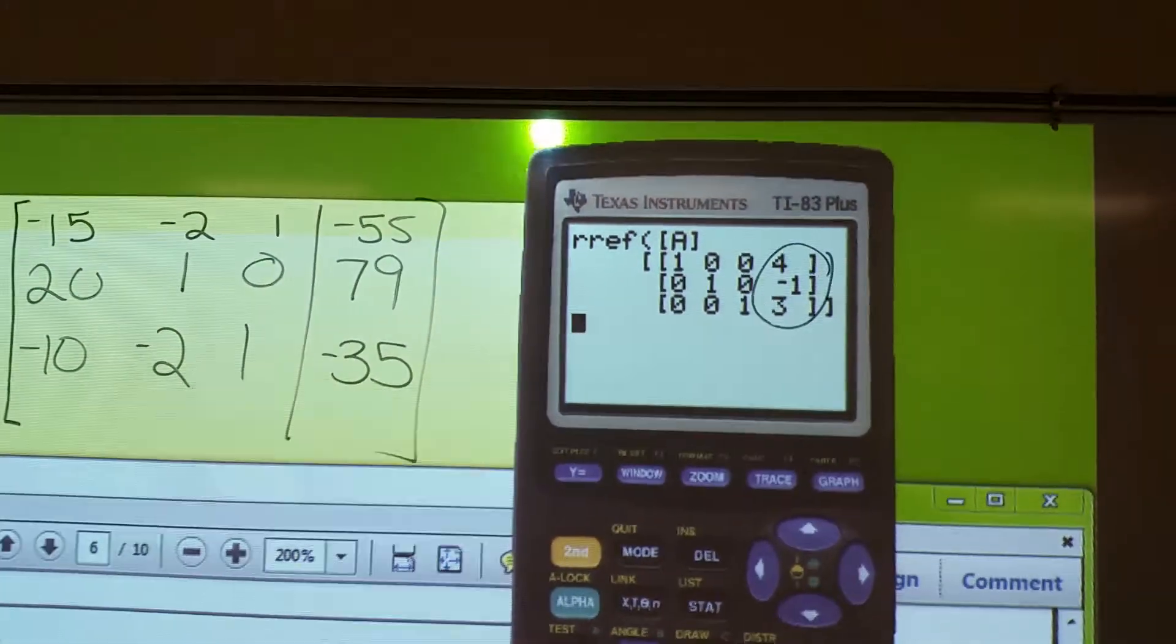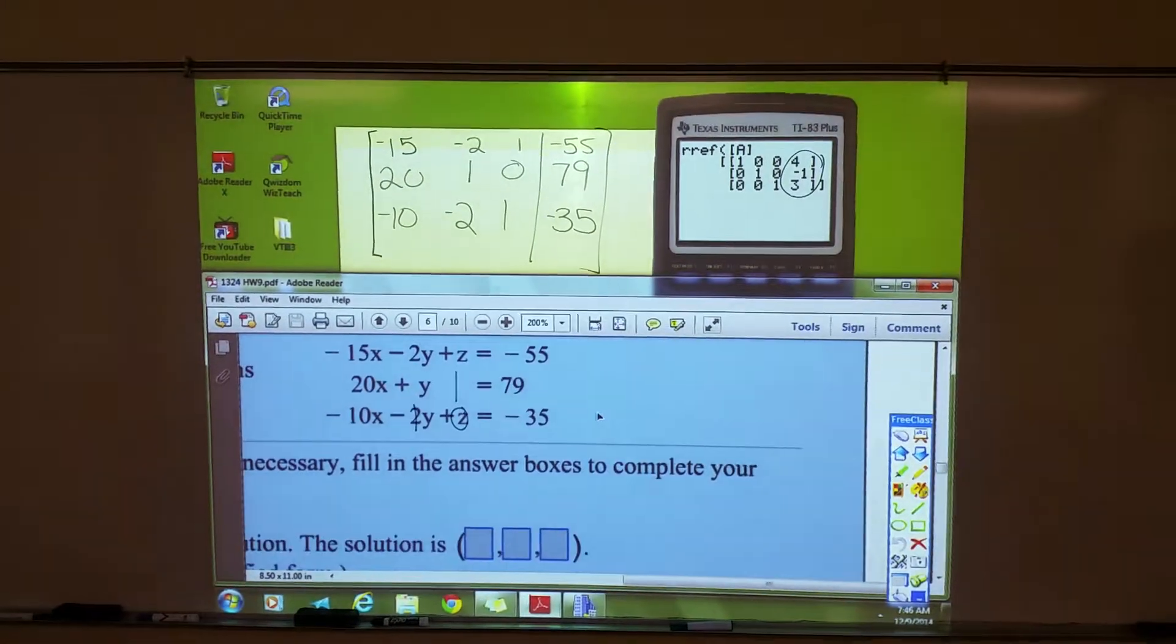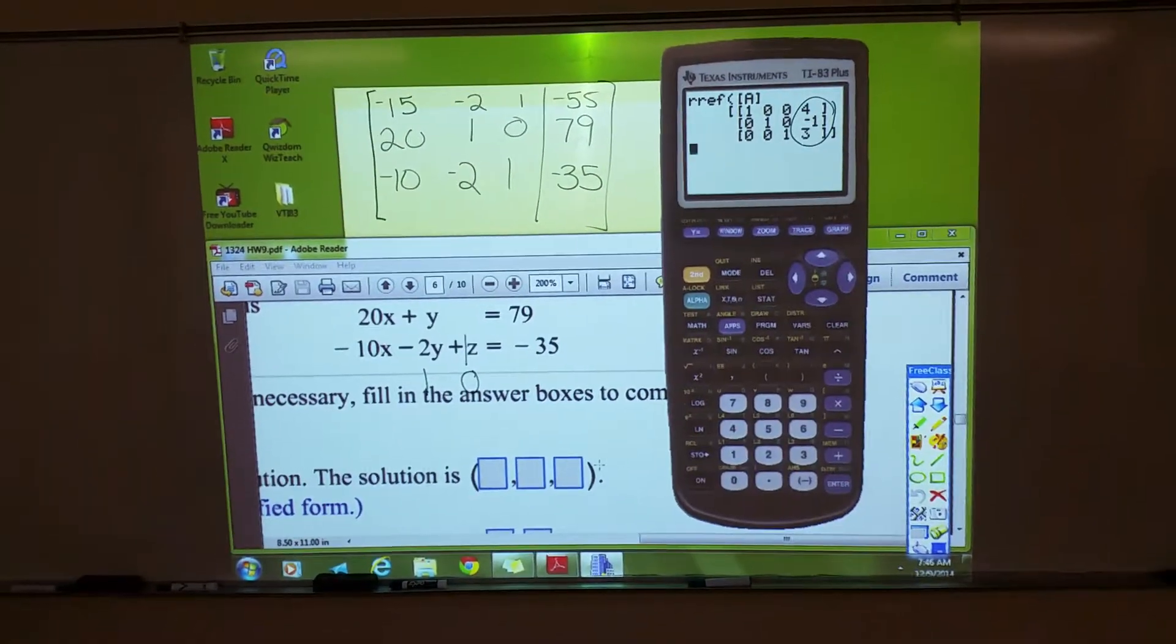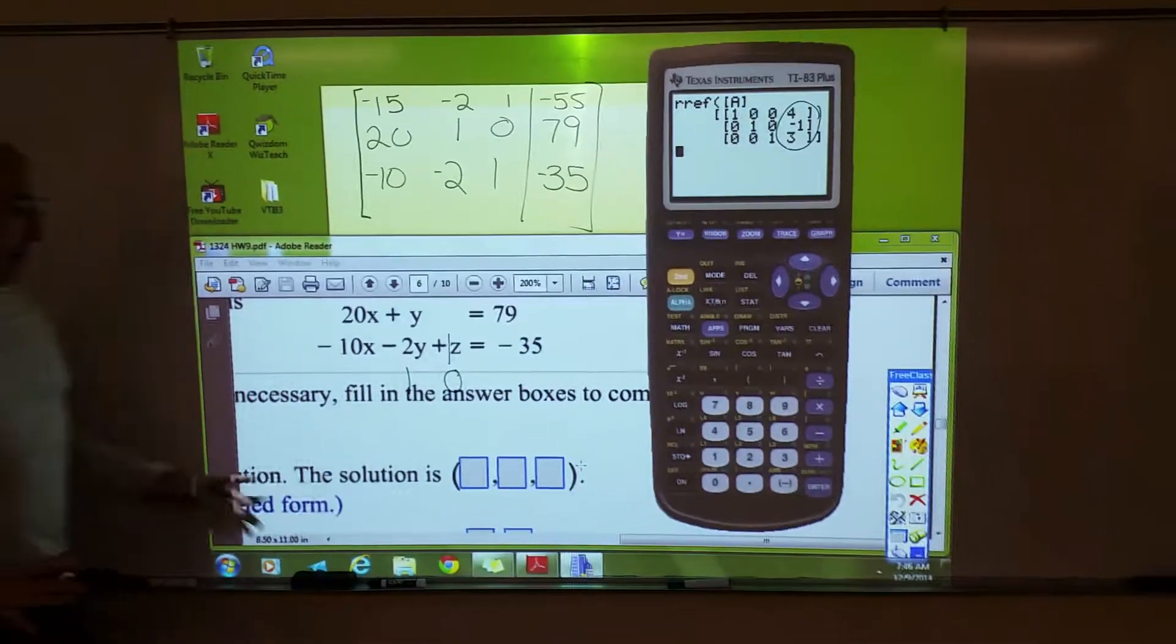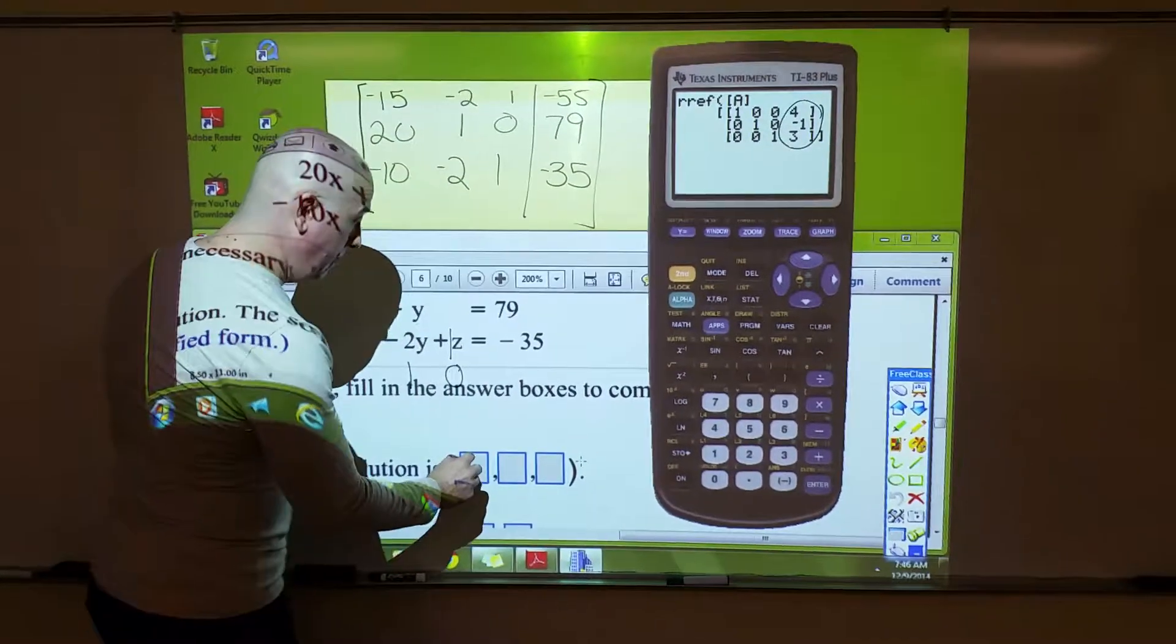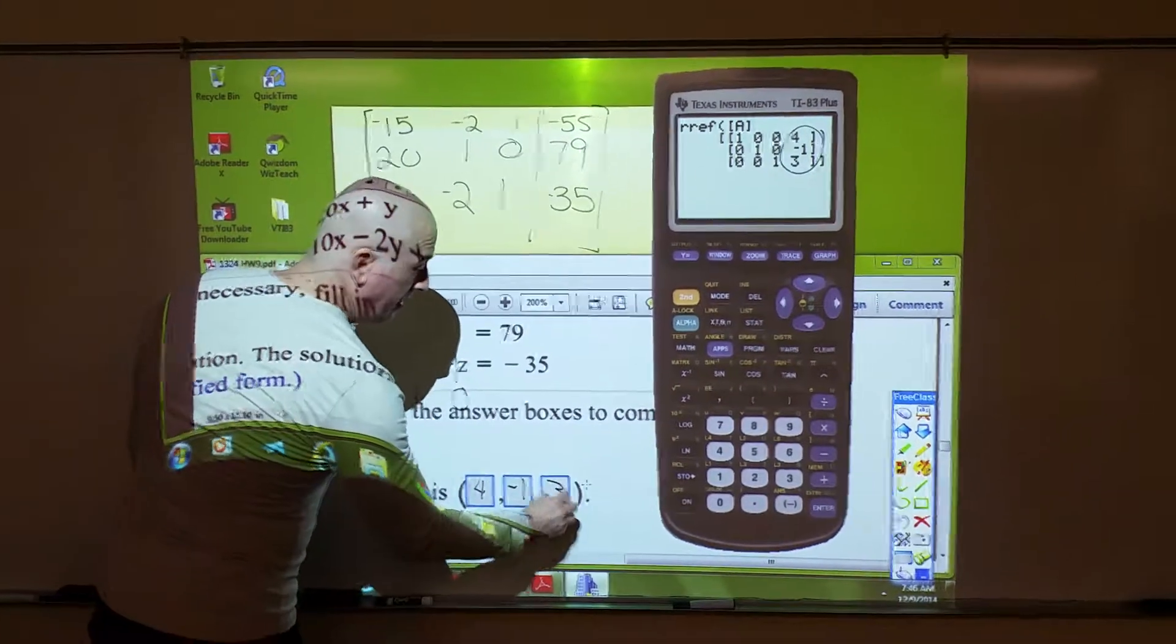So, the solution, you look at this PDF right here. It's just a homework problem. When you punch in your answer with MyMathLab, you enter X, Y, and Z there. So, you put a 4, a negative 1, 3.